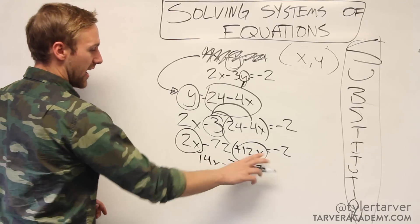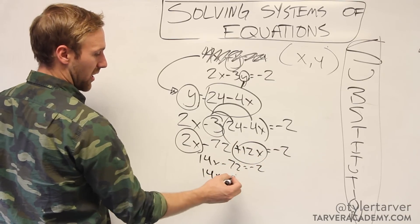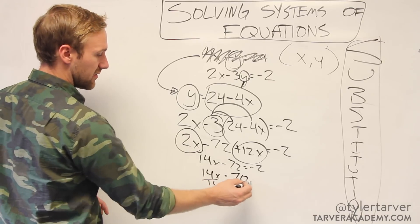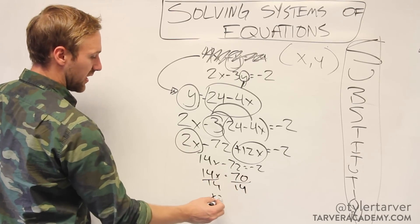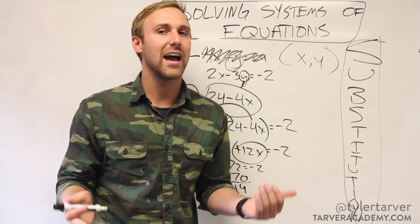And then I want to add 72 over there. So I've got 14x equals positive 70. And then I divide 14 on both sides. x equals 5. Boom. I am halfway there. I say halfway.